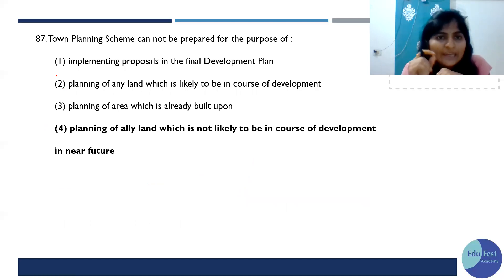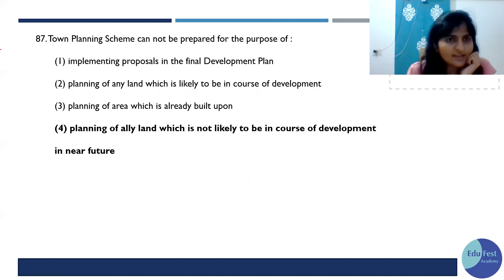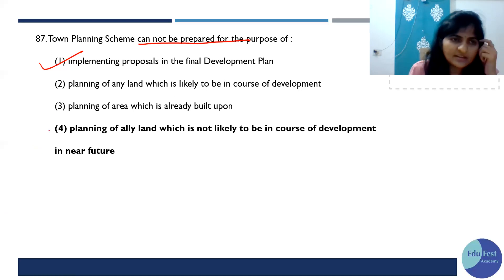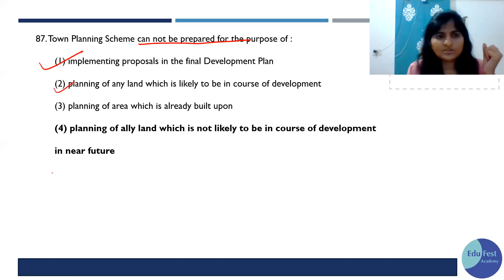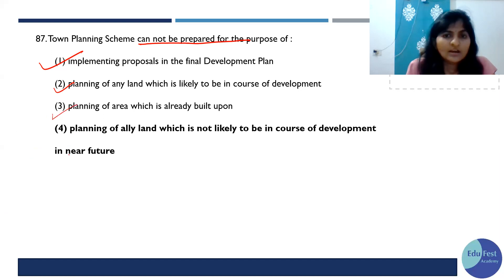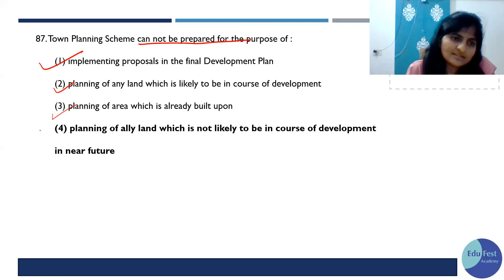The town planning scheme cannot be prepared for the purpose of implementation of the final DP — that is the first sentence, and yes, this is correct. A TP scheme can be prepared for an area which is likely to be in the course of development, which is the second sentence of section 59. It can also be for planning an area which is already built upon. But an area which is NOT likely to be in the course of development — that is the answer.